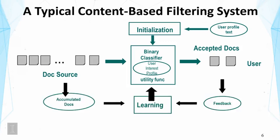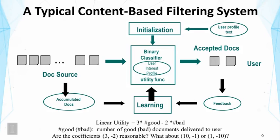There is also a learning module that learns from user feedback over time. Since the user's information need is typically stable, the system has many opportunities to observe behavior — whether the user viewed a recommended item or discarded it. This long-term feedback can accumulate over time and be used to improve the classifier.